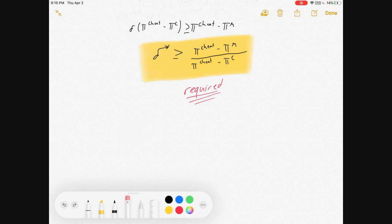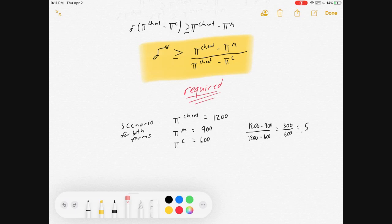So, let's do a little scenario where two identical firms, if they cheat, they get 1200 bucks. If they get collusive, they get 900 bucks. And if they Cournot, they get 600 bucks. I picked very easy numbers. These are actually numbers you would have to solve for. See my other videos on Cournot and collusion and such for details on that. But that would mean pi cheat 1200 minus pi M is 900. Over 1200 minus 600. That's 300 over 600. That's 0.5.